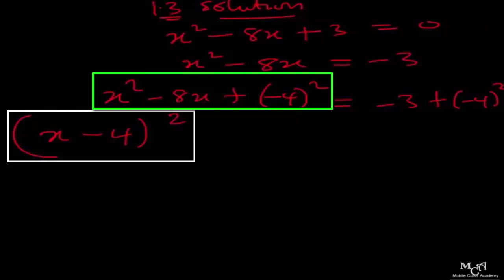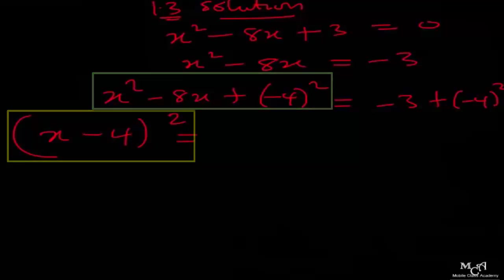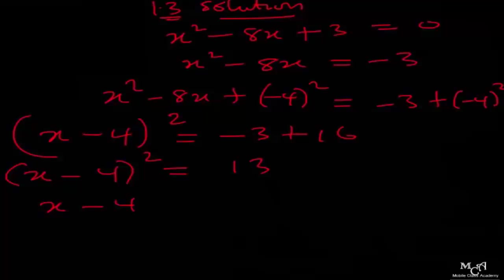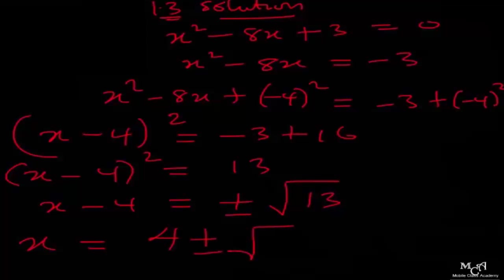As I taught you when we started perfect squares, this expression becomes: minus 4 squared gives us positive 16, so x minus 4 all squared equals minus 3 plus 16, which gives us positive 13. From here, x minus 4 equals plus or minus square root of 13. Therefore x equals 4 plus or minus square root of 13. This is our final result.